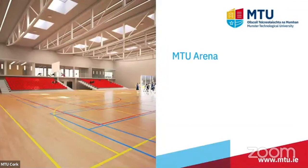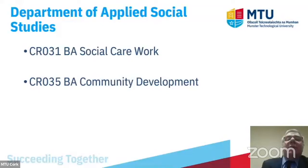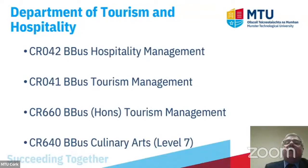CAO programmes offered in the Department of Applied Social Studies include CR031 B.A. in Social Care Work, for students who want to work with those who experience marginalisation, discrimination, or have special needs — with compulsory 800 hours of work placement across three years in settings such as the homeless sector, disability sector, and community sector. CR035 Community Development provides an opportunity for students to achieve formal qualifications in community work. The university also boasts the finest tourism and hospitality education facilities in the country, with two production kitchens, five specialist kitchens, two restaurants, a training bar, and a full range of support facilities.